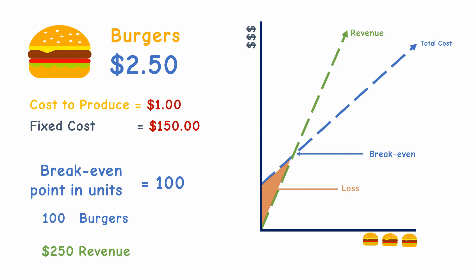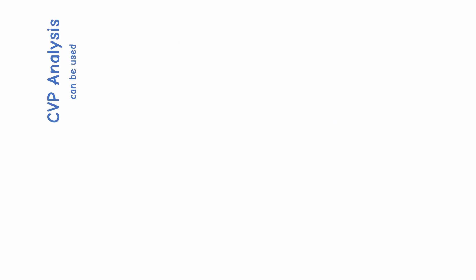Selling below the break-even point means that the business is at a loss, and selling beyond this point means that the business is earning a profit. Your profit is the excess in sales after covering all your expenses — this is your take-away money.